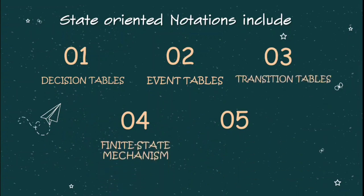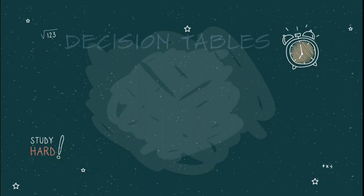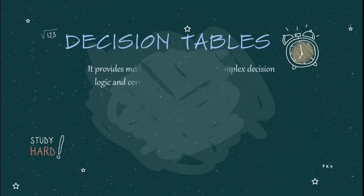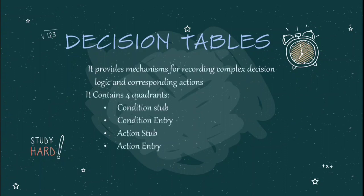Let's discuss them one by one in a detailed manner. The first example is decision tables. Decision tables are widely used in data processing applications. The decision table is segmented into four quadrants: condition stub, condition entry, action stub, and action entry. The condition stub contains all the conditions being examined, and the condition entries are used to combine conditions into decision rules.